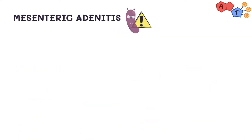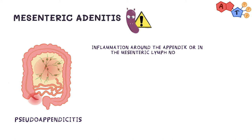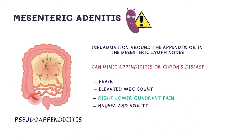Mesenteric adenitis, also known as pseudo-appendicitis, is inflammation around the appendix or in the mesenteric lymph nodes. This can mimic appendicitis or Crohn's disease. It usually presents with fever, elevated white blood cell count, right lower quadrant pain, and nausea and vomiting. You should keep this in mind if someone presents with these symptoms and they mention puppies or other sick kids at a toddler's daycare center.